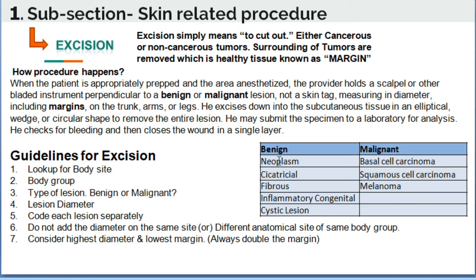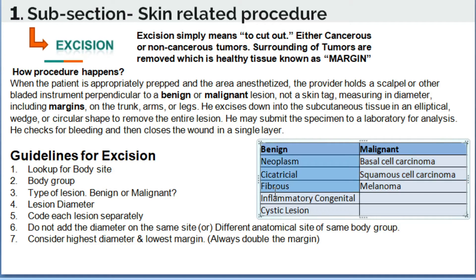You can see examples here — these are types of skin cancers. The physician will mention benign or malignant lesion. These are the keywords for benign: Neoplasm, Cicatricial, Fibrosis, Inflammatory, Congenital, and Cystic lesion.